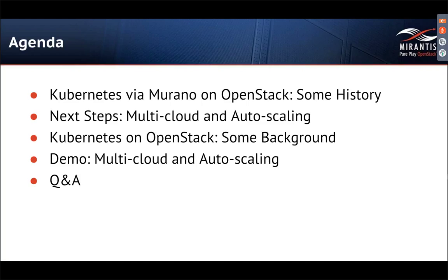We're going to talk about the history of how Mirantis has worked with Kubernetes and Murano on OpenStack, and then we're going to drop into a long and detailed demonstration of a new feature. This gives you the capability of using Murano to quickly and efficiently install a Kubernetes cluster on OpenStack and control from a single pane of glass — a single CLI interface — that cluster, a remote cluster on Google Container Engine, and eventually on other hosted Kubernetes platforms. It also gives you control of threshold-based automatic auto-scaling at the infrastructure level.